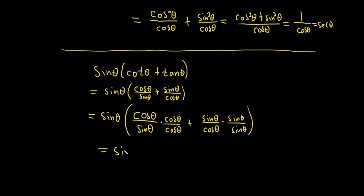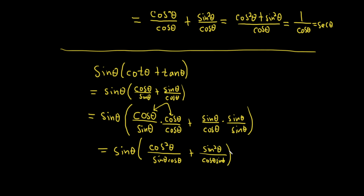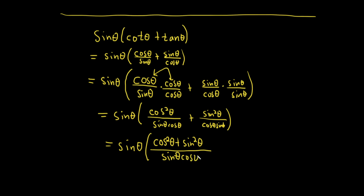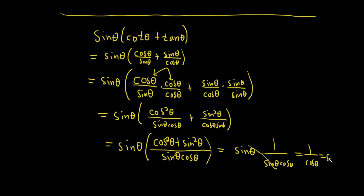Let's go ahead and finish it — I think it's about the same either way. So this is sine theta. We distribute across: this is cosine squared theta over sine theta cosine theta, plus sine squared theta over cosine theta sine theta. Now we can add straight across. So this is sine theta times cosine squared theta plus sine squared theta, all over sine theta cosine theta. And that's 1 — it's that famous equation. So this is sine theta times 1 over sine theta cosine theta, which is 1 over cosine, which is secant. So we essentially did the same thing just in a different order.